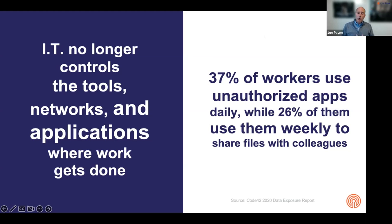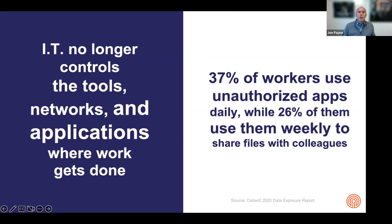26% use unauthorized apps weekly to share files with colleagues. This is employees using their Dropbox accounts. Why do they do that? We ask them — it's so easy. They say, 'I had trouble doing the same thing in Google Drive or OneDrive, but I use Dropbox for my church or soccer team, so I shared some files with my team.' But of course, once files go into that person's Dropbox account, they're there forever. Or Gmail — people say they had trouble getting into the corporate email systems and were just trying to do their job, so they saved files via Gmail. Their psychology is that when they're out of the office, they're way more likely to use these kinds of exfiltration vectors.